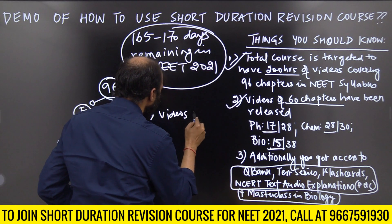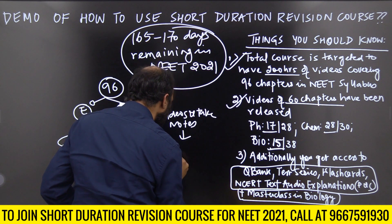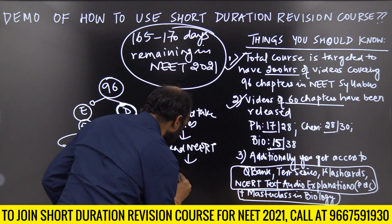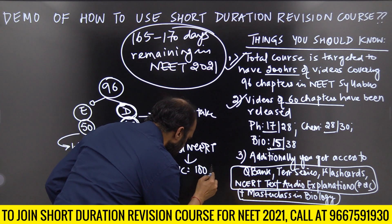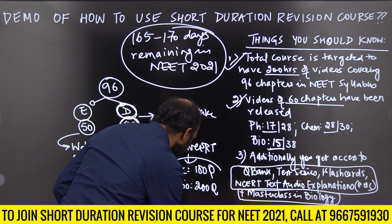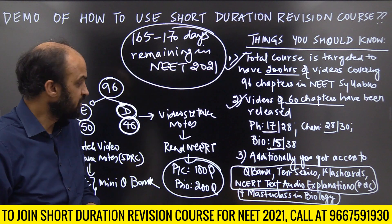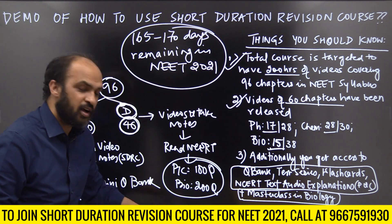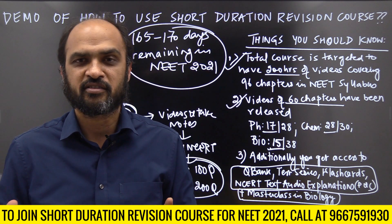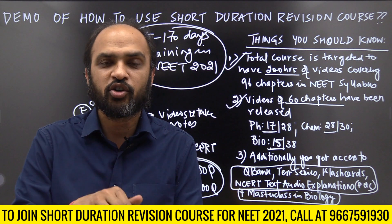For chapters you find difficult - all 46 of them - watch videos and take notes from the full course, then read NCRT, and then do 100 questions per chapter for Physics and Chemistry and 200 questions per chapter for Biology. For many of you who have been studying properly, you've already done this part, so the short duration revision course helps you revise before your mock tests.